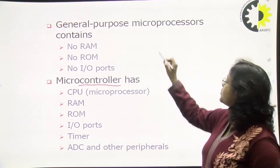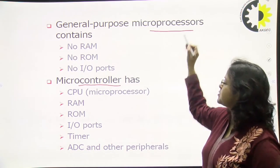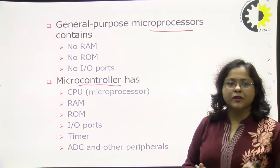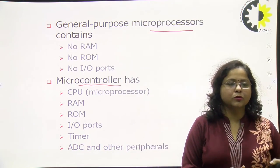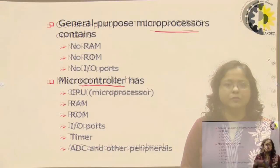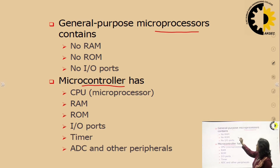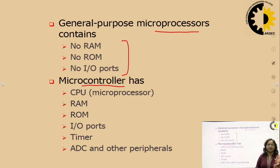Regarding microprocessor: a microprocessor is a general purpose system which contains various registers, control unit, ALU, timing and control section, interrupts, and serial communication ports. But the memory — i.e., RAM, ROM — and peripherals as well as timer devices are connected from outside the microprocessor to make it work as a complete system.